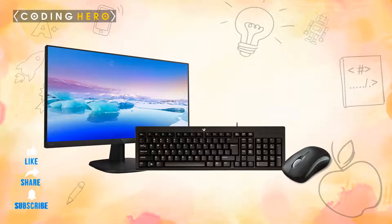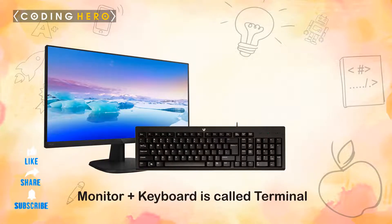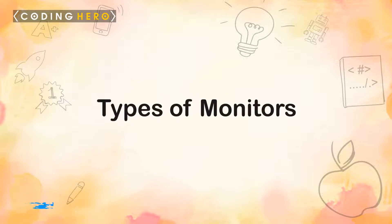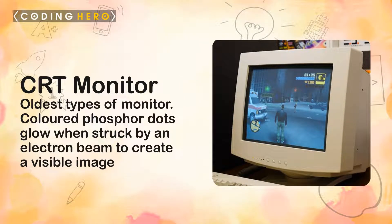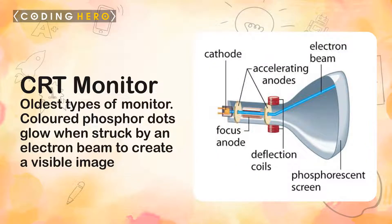A monitor, along with the keyboard, is called a terminal. Types of monitors: CRT monitor. A CRT monitor is one of the oldest types of monitors. It contains millions of tiny red, green, and blue phosphor dots that glow when struck by an electron beam that travels across the screen to create a visible image.